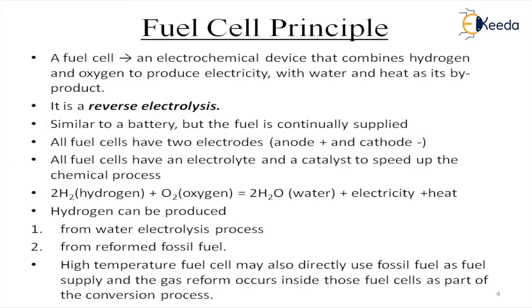Two fuels are used: one is H2 and one is O2. We will get O2, but how is H2 produced? Two processes are used: one is the water electrolysis process, and the other is reforming fossil fuels. These are the two methods to get hydrogen. But in higher temperature fuel cells, fossil fuel is directly given, and inside the cell H2 is formed and used. So for higher temperature fuel cells, fossil fuel is given directly and H2 is generated internally.